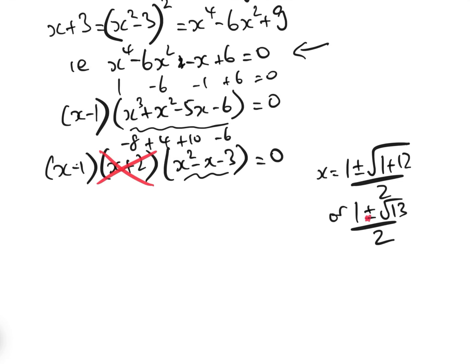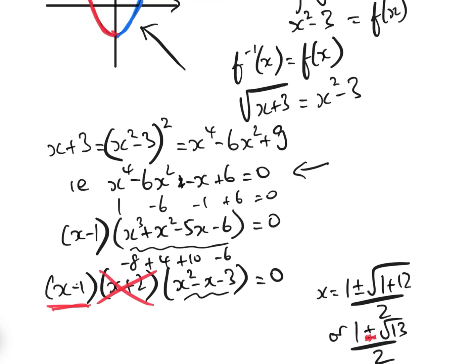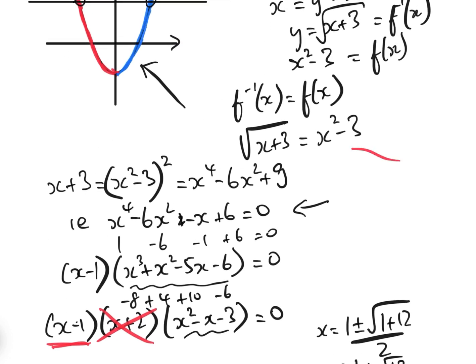and we also know that 1 minus root 13 over 2 can't be a solution. In actual fact, x equals 1 can't be a solution either, because if we look here, x equals 1, that would give minus 2, and the square root would have to be negative, which obviously we can't have.